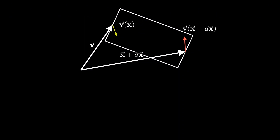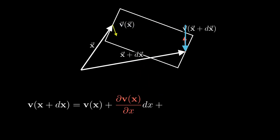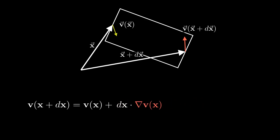The velocity at point x plus dx is the velocity at point x plus the change in the x direction and the change in the y direction. This is the derivative with respect to x times dx, with respect to y times dy, and for 3D also with respect to z times dz. A short way to write this is dx times the gradient of v.